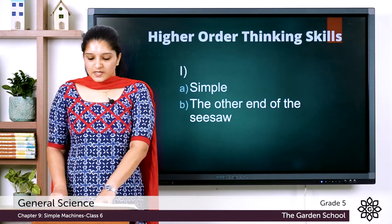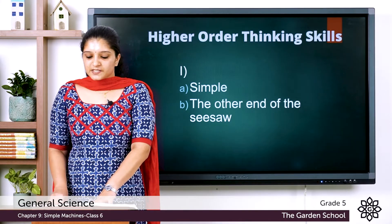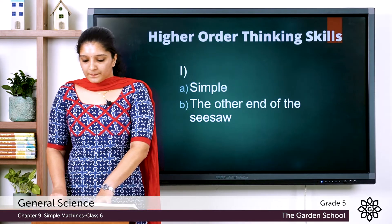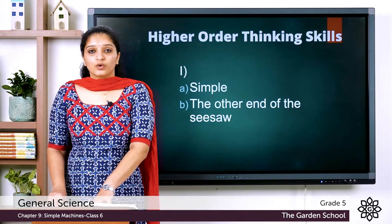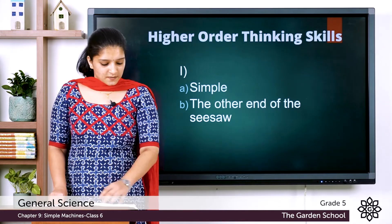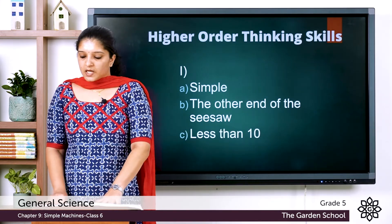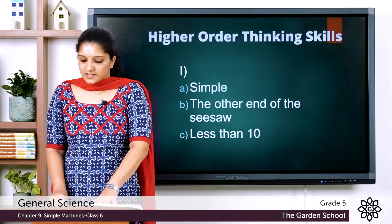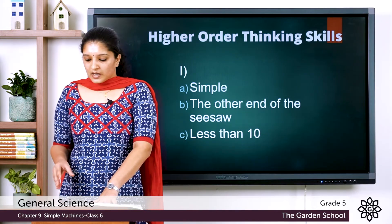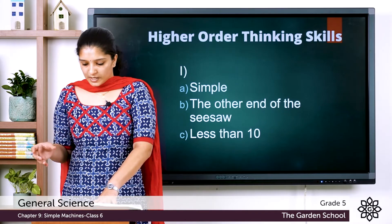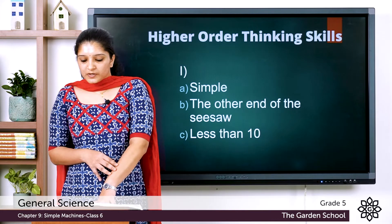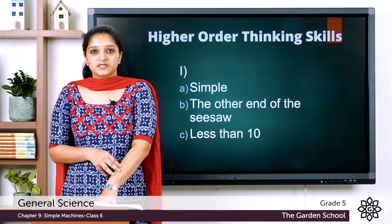The next question: when the fulcrum is placed at position A, ten adults are needed to move the gorilla. How many adults will be able to move the gorilla if the fulcrum is at position B? The answer is less than 10, because less force is needed when the fulcrum is closer to the load. If we move the fulcrum closer to the gorilla, we have to apply less force, so fewer people are required to lift the gorilla.